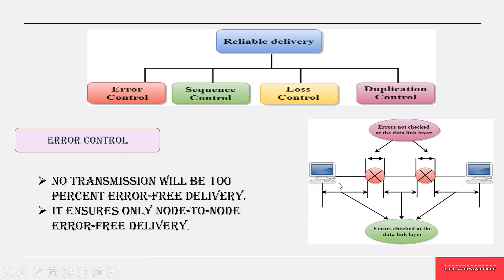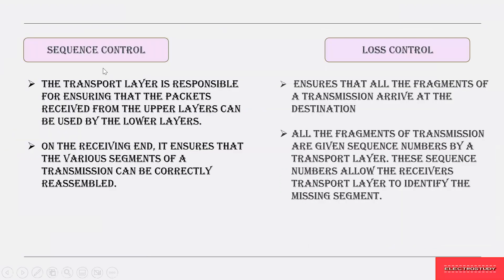Error control ensures node-to-node error delivery — it checks that each and every node between the source and the destination doesn't have any error, and finally when the data is received by the receiver, it makes sure that all the messages sent to the receiver end are error-free.